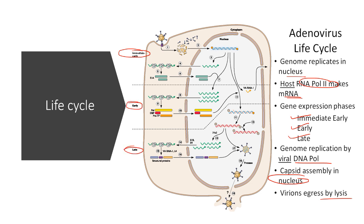Starting with the immediate early stage: the adenovirus contacts a specific receptor and is engulfed inside the host cell. After engulfment, the capsid proteins and capsomere structures dissociate and the double-stranded DNA is transported into the host nucleus. Inside the nucleus, the DNA is transcribed into mRNA using the host's RNA polymerase 2, since the virus has no gene to make its own RNA polymerase. The mRNA is transported into the cytosol and translated into specific proteins.